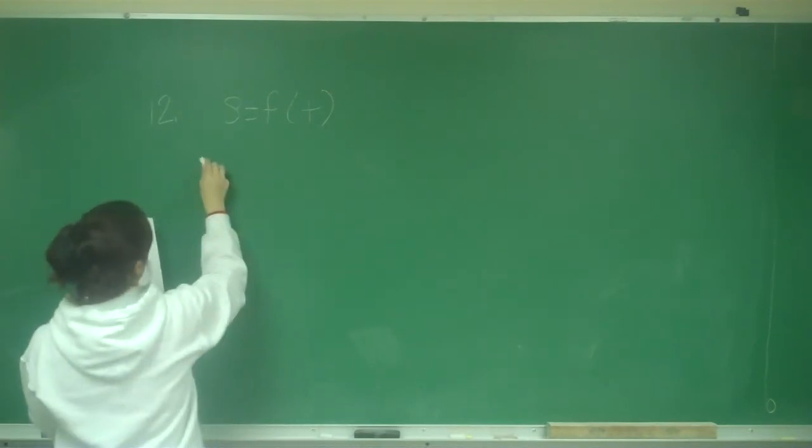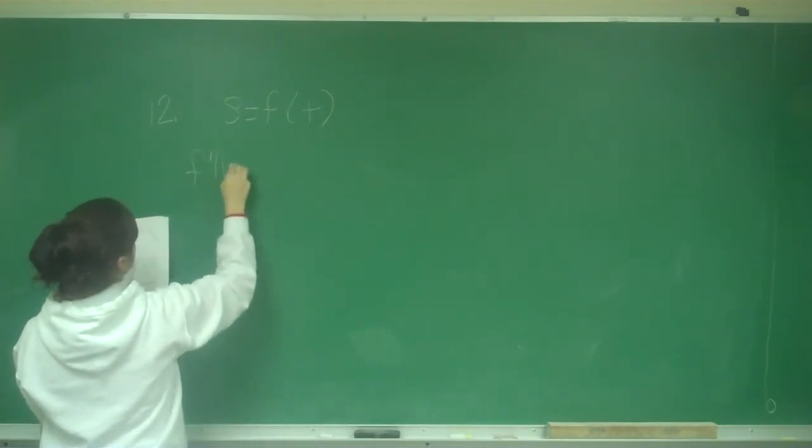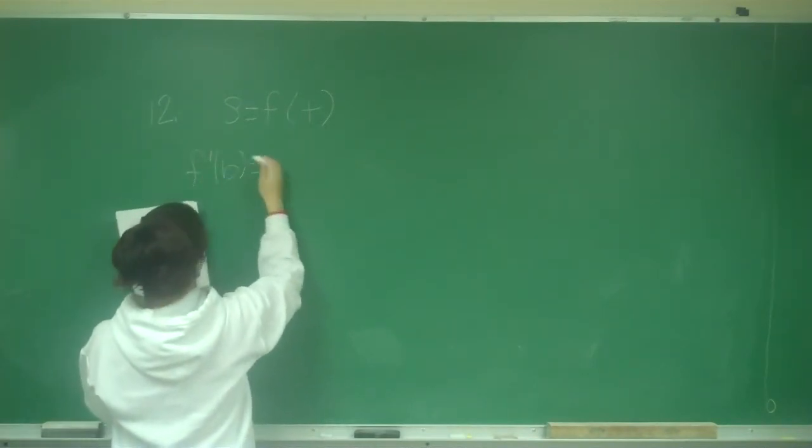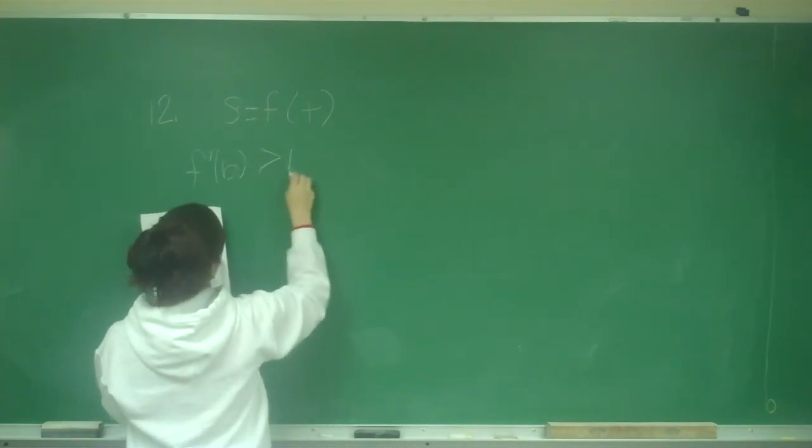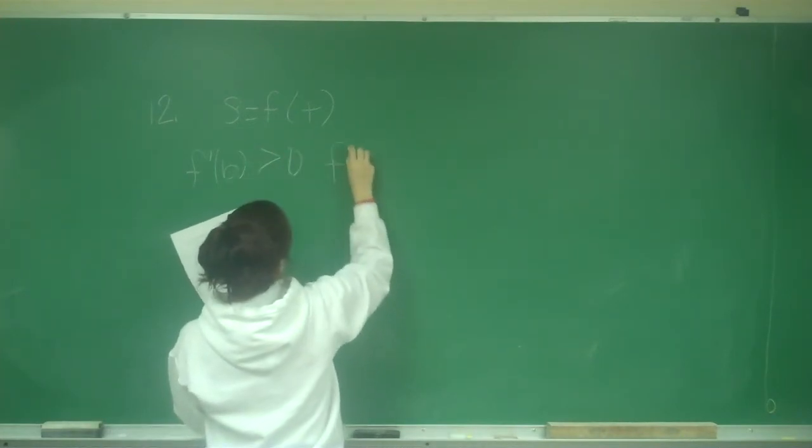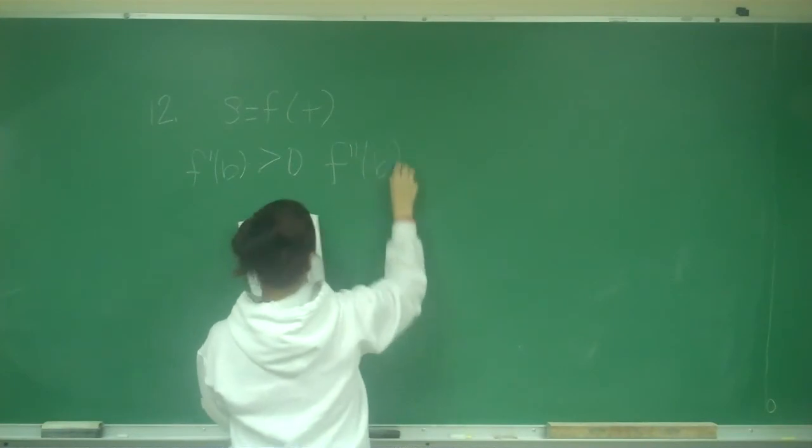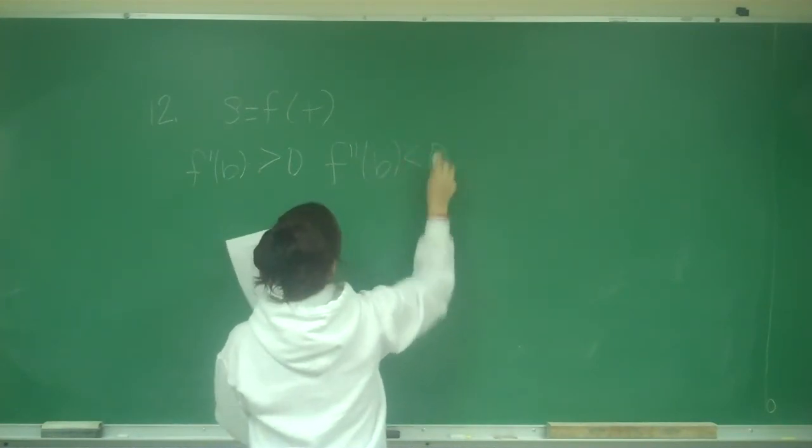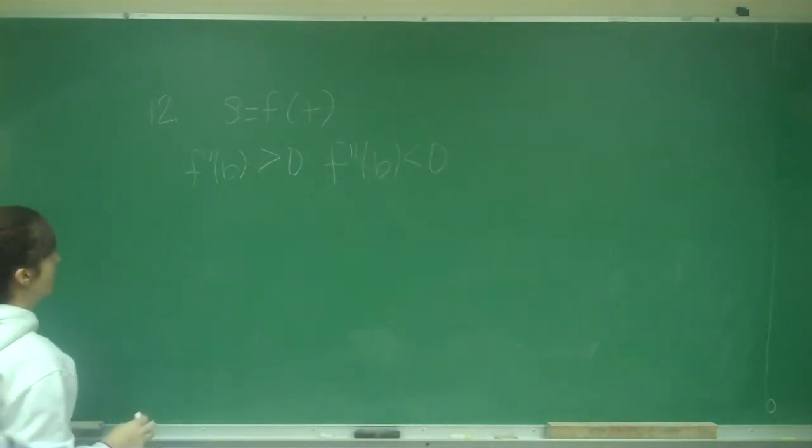And they say if F prime of B is greater than 0 and F double prime of B is less than 0, the object is slowing down.